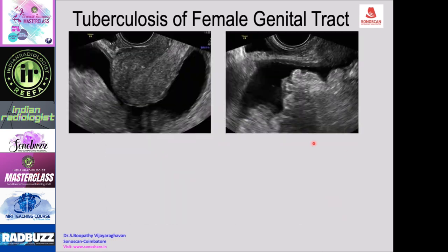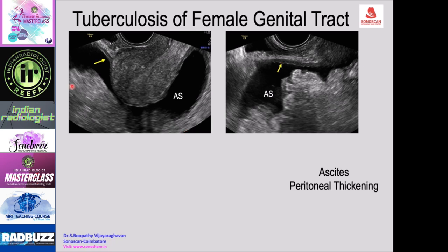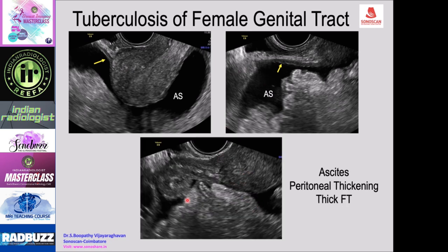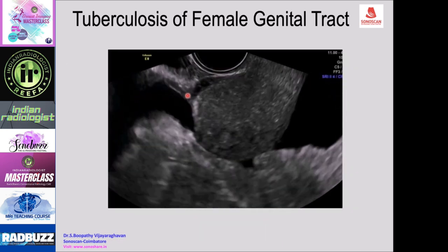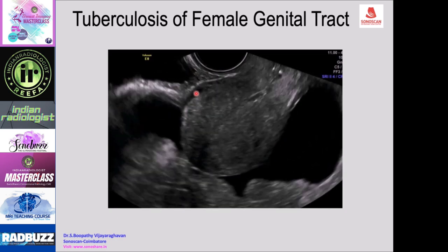In another case, the sagittal scan of the uterus shows obliteration of peritoneal recesses due to peritoneal thickening. The vesicouterine recess is obliterated with peritoneal thickening, ascites, and a thick fallopian tube visible in the pelvis. A dynamic scan video demonstrates obliteration of the vesicouterine recess, with no sliding of the bladder wall due to adhesions.